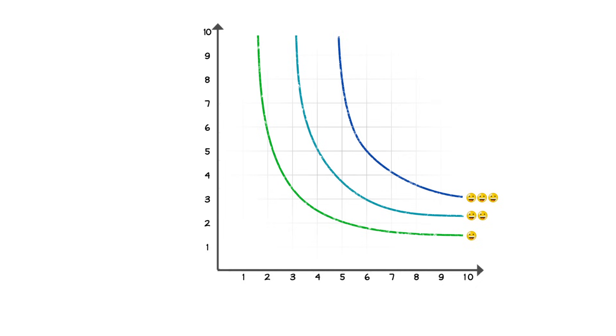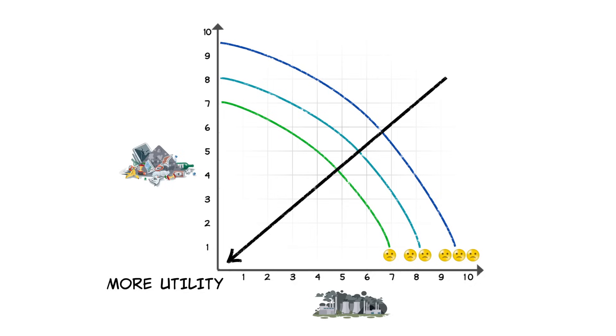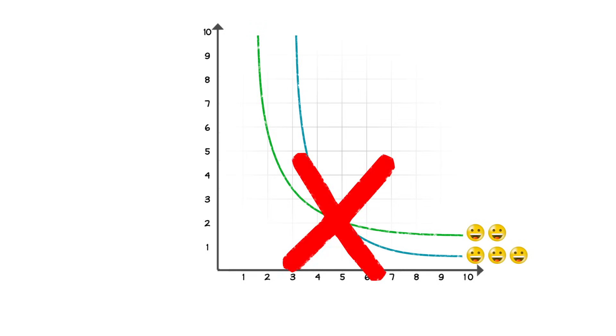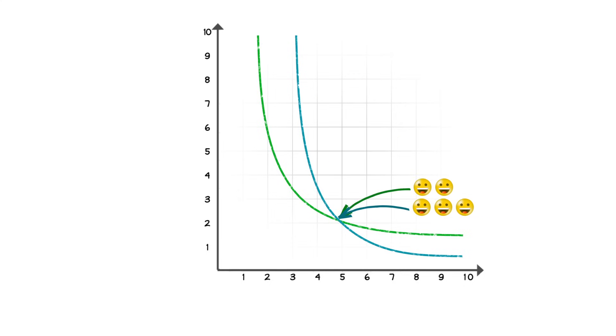However, if we're talking about bads — say pollution or trash — then the less we have of them the better. In this case, we are better off when we get closer to the origin. Another important property of indifference curves is that they cannot intersect each other. If we allowed two indifference curves to cross, we would be saying that the combination of goods at the intersection point represents, at the same time, different levels of utility — which makes no sense. So we assume this cannot happen, despite people exhibiting different preferences towards goods.